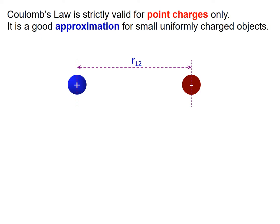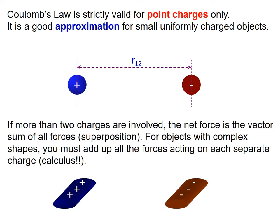This is a good approximation for small uniformly charged objects, and is valid for point charges. When more than two charges are involved, the net force is the vector sum of all forces — you calculate the force from each individual point charge and then sum them all up. This process is called superposition. For objects with complex shapes, you must add up all the forces acting on each separate charge.